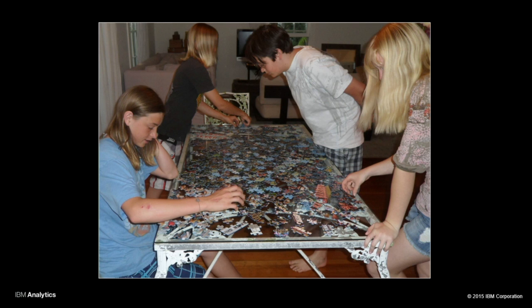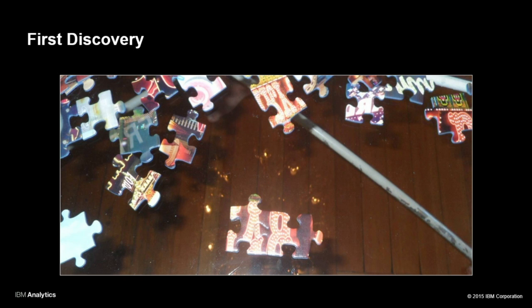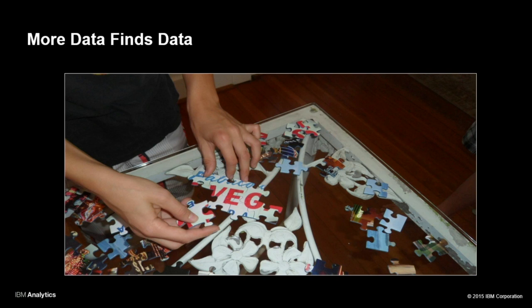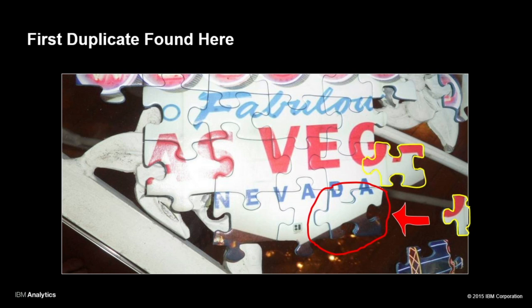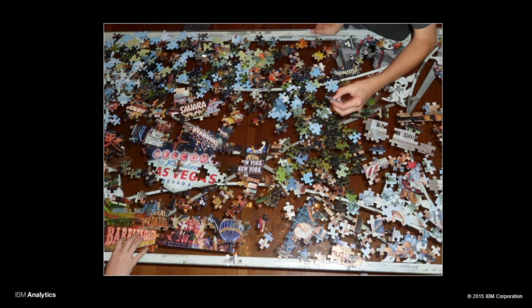My girlfriend sees her son and three cousins. I see four parallel processing pipelines. These are the first two pieces of data that find each other. Here, more data finds more data. Here, I can see this duplicate. At this point, they don't even know duplicates are possible — until they find this piece here and stack it up. But nonetheless, the puzzle began to take form.